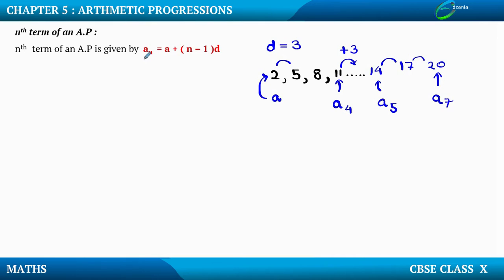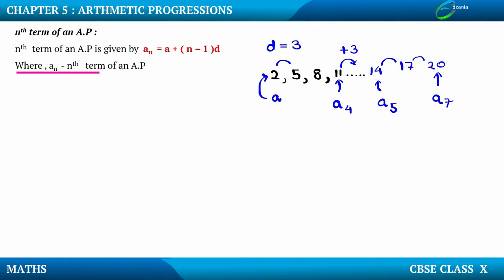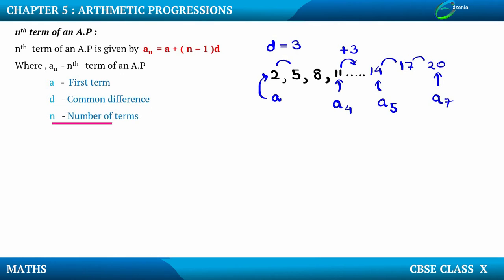For that we have this formula to find out the nth term of an AP: an = a + (n-1) × d, where an is the nth term or the last term of an AP, a is the first term, d is the common difference, and n stands for the number of terms.